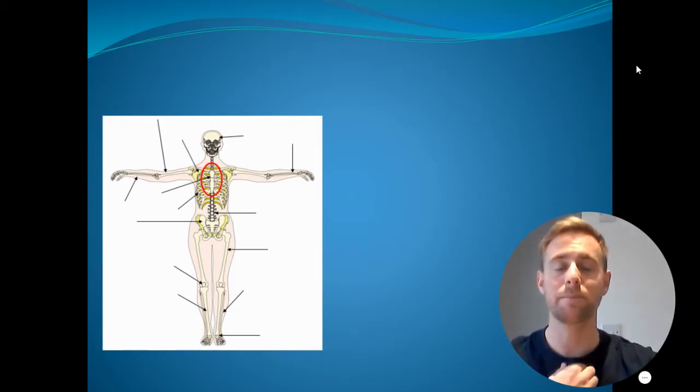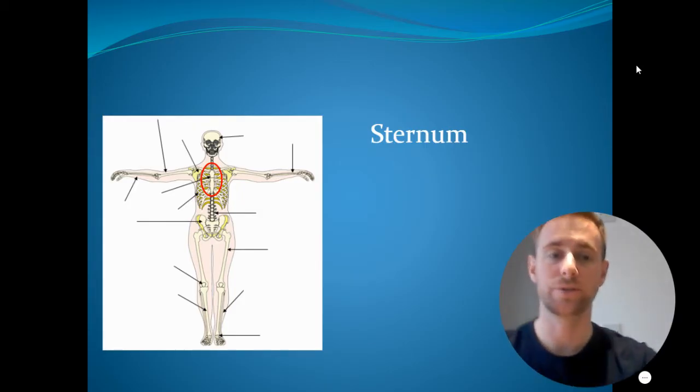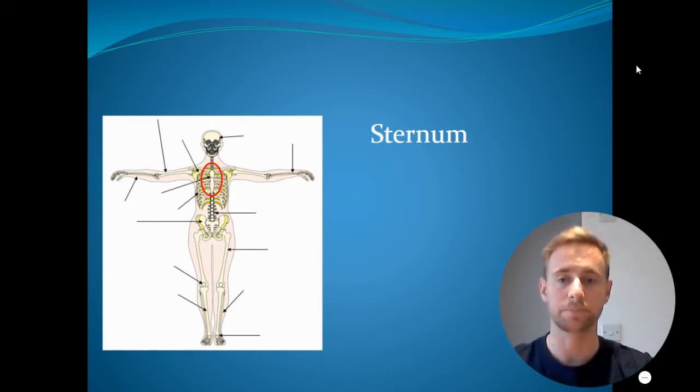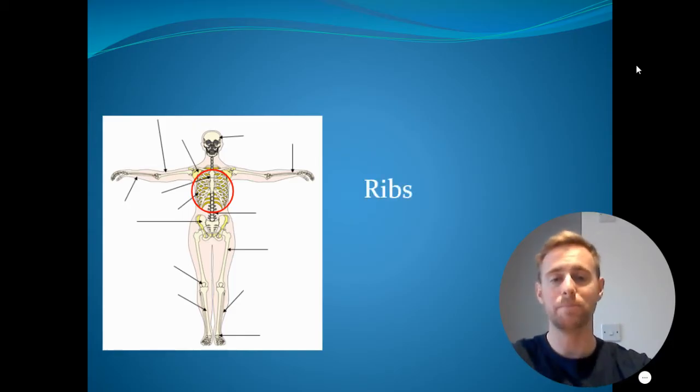Next we have our main bone which goes down the middle of our ribs here, and that is our sternum. Again, that is used for protection of our vital organs. We then have our ribs, which are our main bones going all the way around the front of our body, looping around towards our back. Again, used for protection.